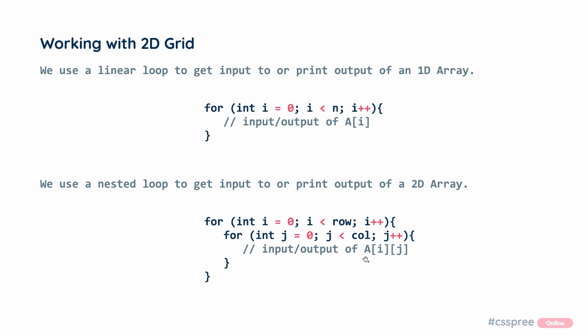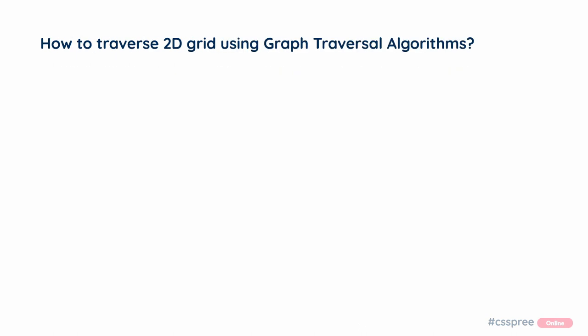We have to access the index to one-dimensional — we have to add i and j, because we have to access the value of this array. We have to see the graph traversal algorithm — DFS and BFS — and how do we implement it on the 2D grid.